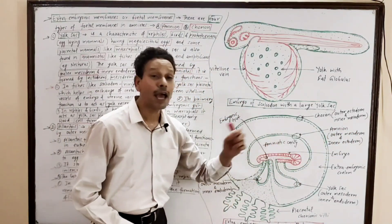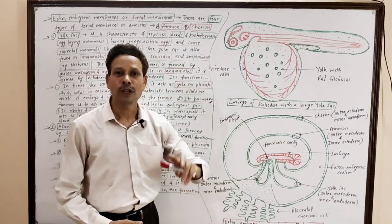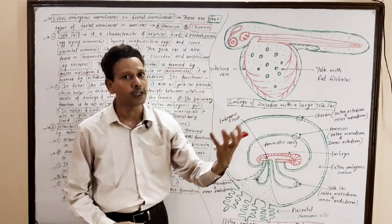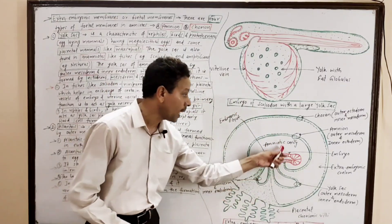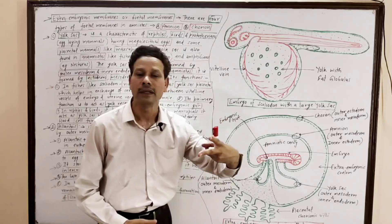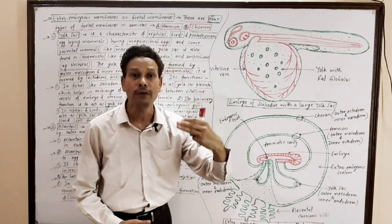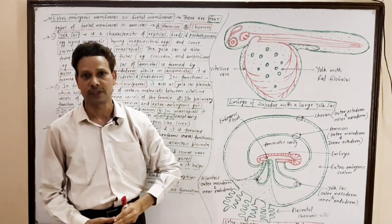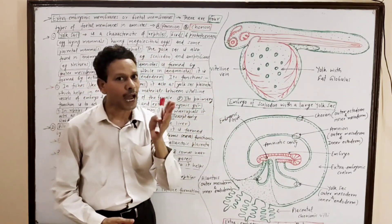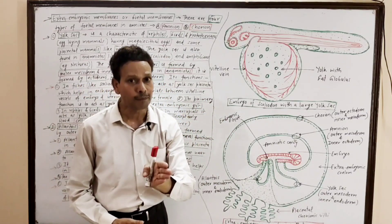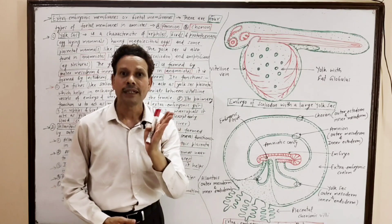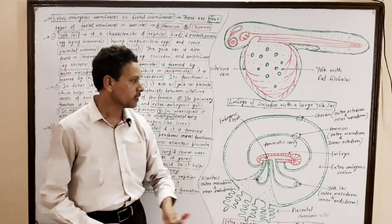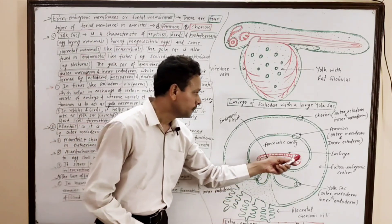The amnion encloses a cavity called the amniotic cavity, which contains a fluid known as amniotic fluid. This amniotic fluid prevents desiccation of the embryo.